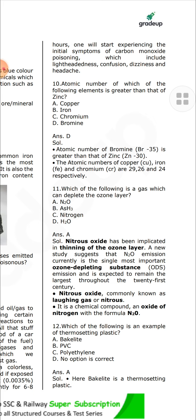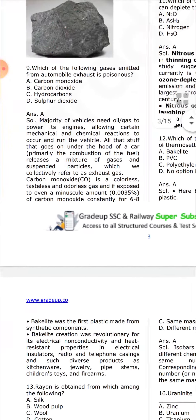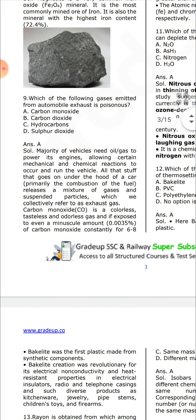Which of the following is an example of thermosetting plastic? Bakelite. Bakelite is a thermosetting plastic and was the first plastic made from synthetic components. Bakelite's creation was revolutionary for its electrical non-conducting and heat-resistant properties. It was used in electrical insulators, radio and telephone casings, and diverse products such as kitchenware, jewelry, pipe stems, children's toys, and firearms.